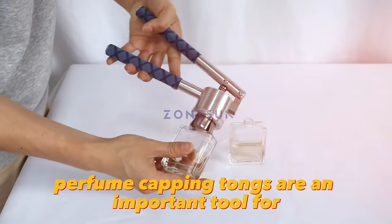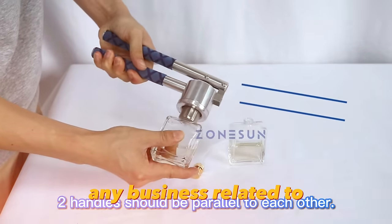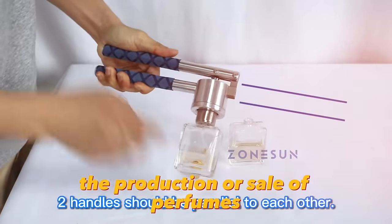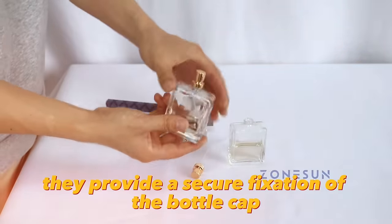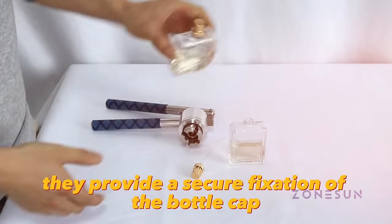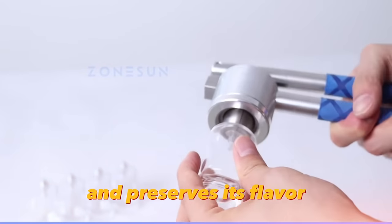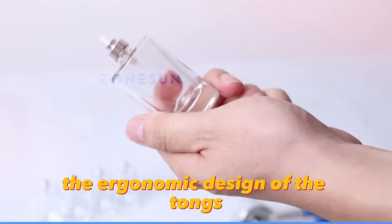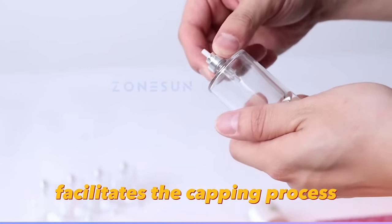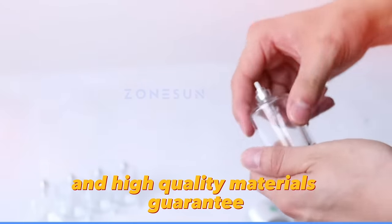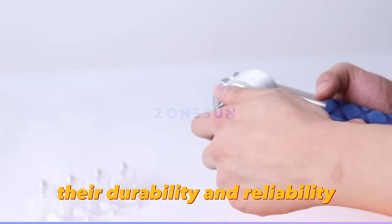Perfume capping tongs are an important tool for any business related to the production or sale of perfumes. They provide a secure fixation of the bottle cap, which prevents leakage of perfume and preserves its flavor. The ergonomic design of the tongs facilitates the capping process, and high-quality materials guarantee their durability and reliability.